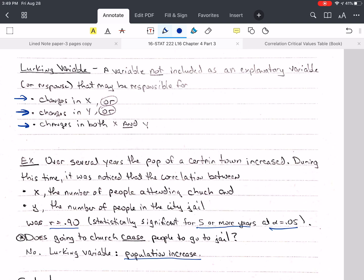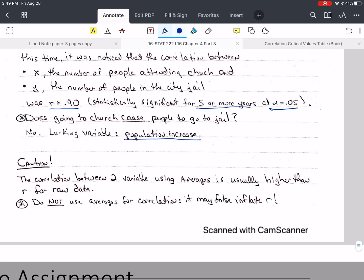But we can be very sure that going to church does not cause people to go to jail. There's a lurking variable, and that lurking variable is the population increase. So the increase in both of these was due to the increase in the overall population of town. So as more people come in, it's likely that some of those, a percentage of those will attend church, and a percentage of those will end up in jail.